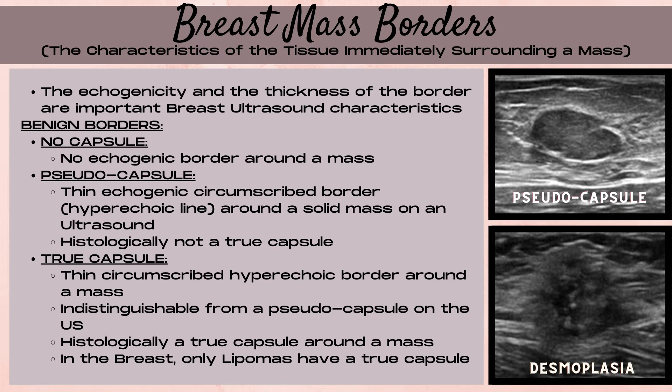The next type of benign border is known as a pseudo capsule — a thin, echogenic, circumscribed border around a mass that looks like a bright, hyperechoic white line. It's important to note that histologically, a pseudo capsule is not a true capsule surrounding the mass, although on ultrasound it looks like a fully contained echogenic border around the mass.